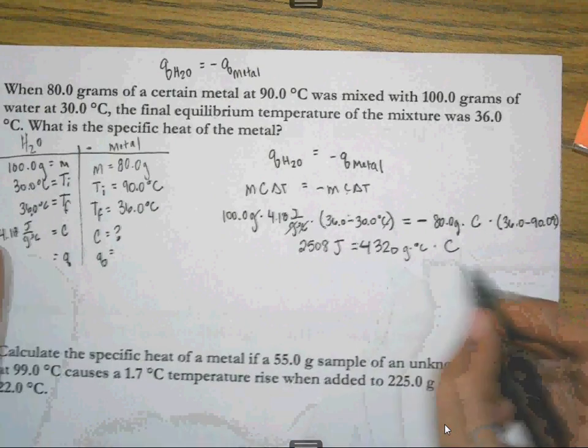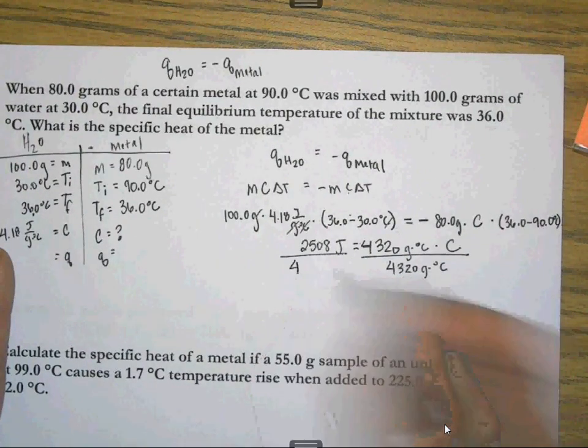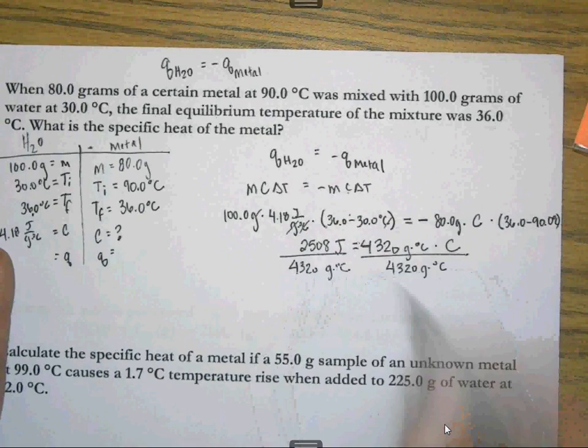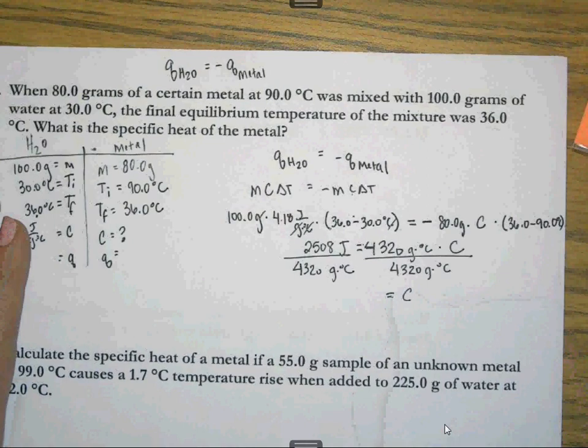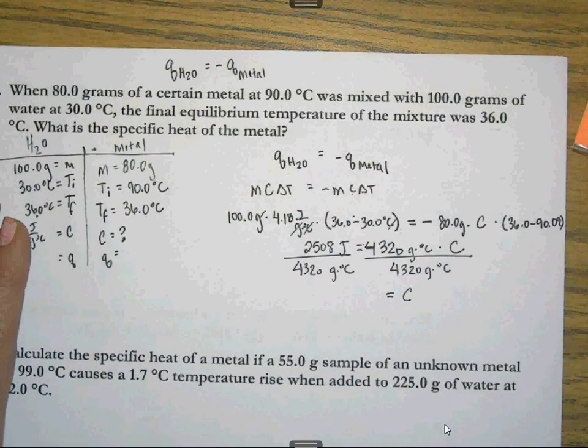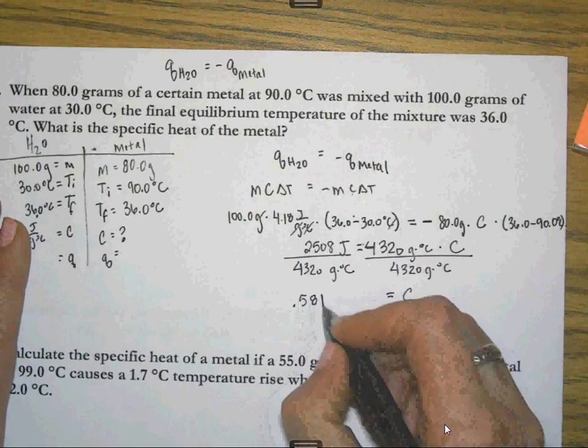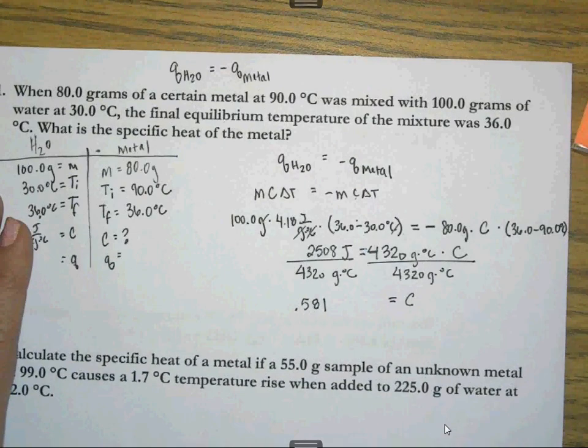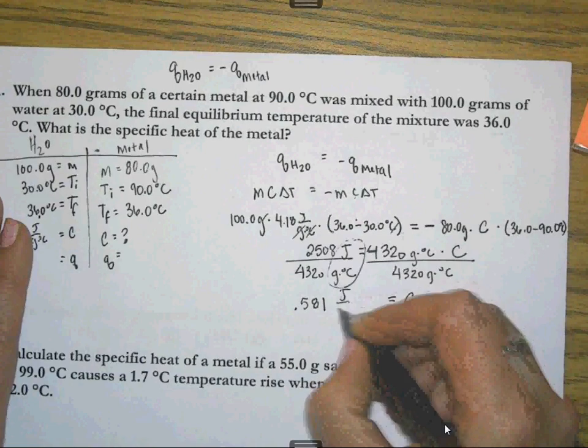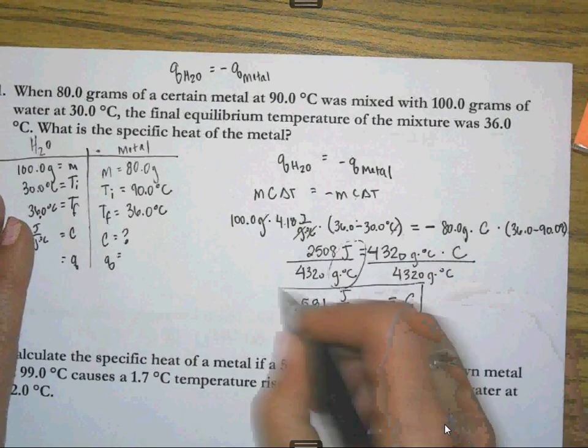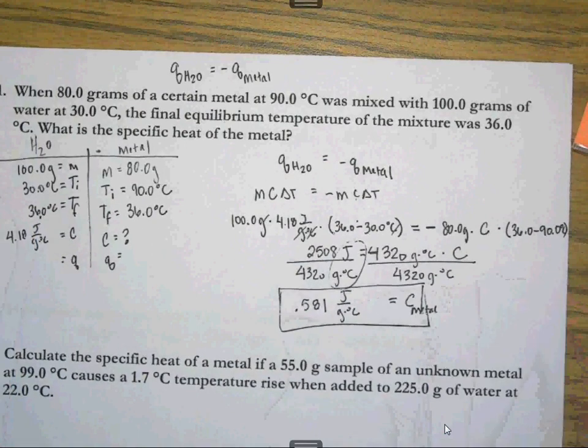Now in order to solve for C, I need to divide both sides by this. I'm not going to continue to work out this much math the entire way. All right. And then if I do my math, that's 2508 divided by 4320. That gives me 0.581 when I round to 3 sig figs. Has to be 3 sig figs because these have 3 sig figs. And my unit is right here. Joules over grams degree Celsius. And there's my answer for the metal. And I can even write in here if I want to, the C of the metal.